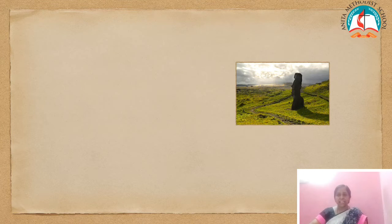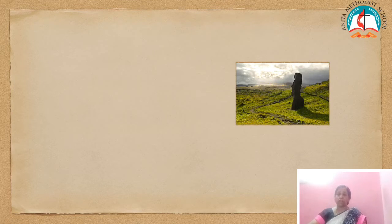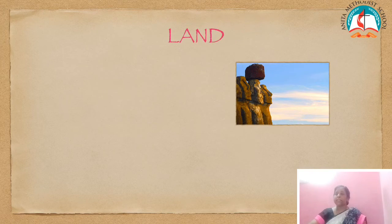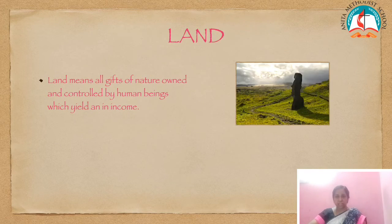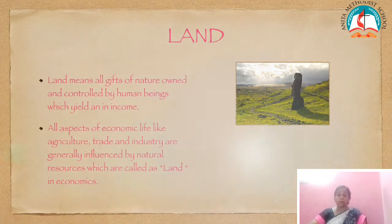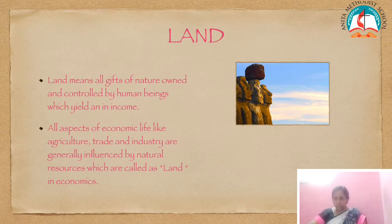Shall we learn the meaning of land and the characteristics of land? In the ordinary sense, land refers to the soil or the surface of the earth. But in economics, land means all gifts of nature owned and controlled by human beings which yield an income. The economic prosperity of a country depends on its natural resources. Hence all aspects of economic life like agriculture, trade, and industry are generally influenced by natural resources, which are called land in economics.